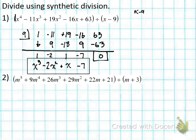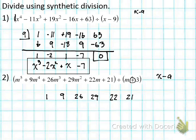Watch me do number 2. They're already in descending order; the variable we're using is m. The coefficients are: 1, 9, 26, 29, 22, and 21. Then for our a, we're looking at our divisor. The form we're looking for is x minus a. On this one there's a plus sign, so that's like saying m minus negative 3. So our a here is going to be negative 3. When it's a plus sign in the divisor, a is negative — it works backwards.